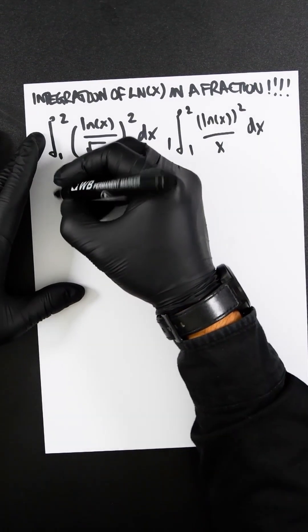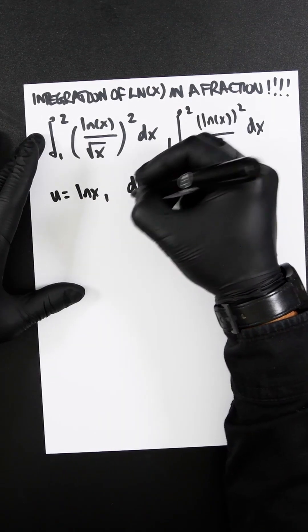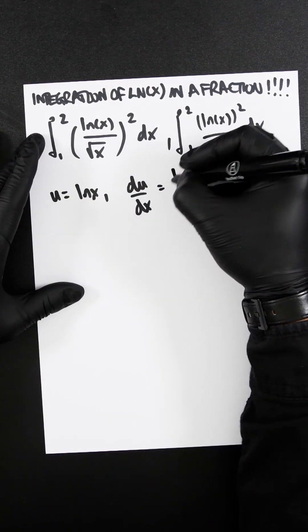Now let's do a substitution. So let's let u equal ln x. And we know that du dx is 1 over x.